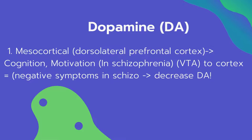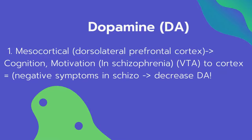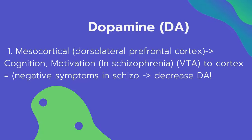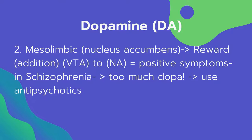The first dopamine pathway is the mesocortical pathway, responsible for cognition and motivation, particularly in schizophrenia. It travels from the VTA to the cortex. In schizophrenia, decreased dopamine in this pathway produces negative symptoms. When antipsychotics are used, dopamine increases in this pathway, thereby decreasing negative symptoms.